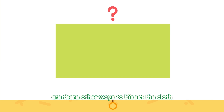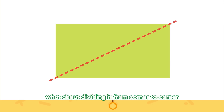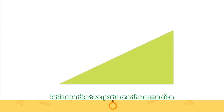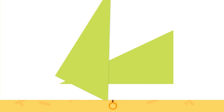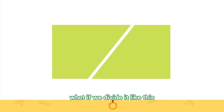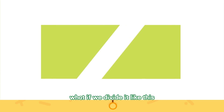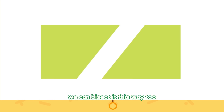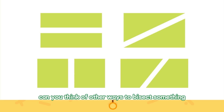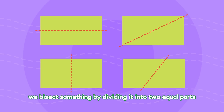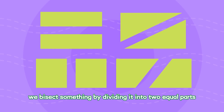Are there other ways to bisect the cloth? What about dividing it from corner to corner? The two parts are the same size! So it can also be bisected this way! What if we divide it like this? The two parts are the same size! We can bisect it this way too! Can you think of other ways to bisect something? Give it a try! We bisect something by dividing it into two equal parts!